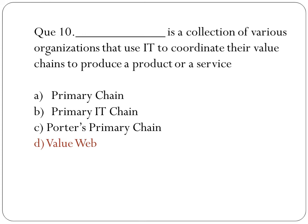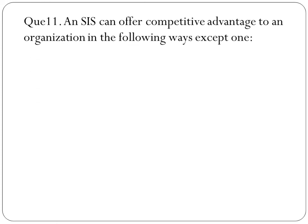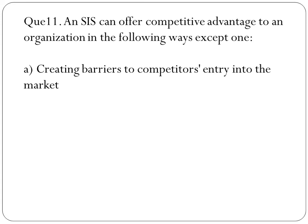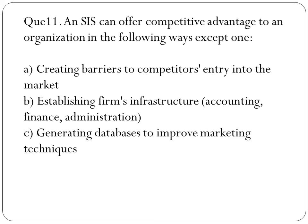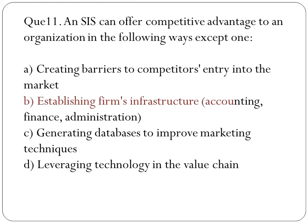Next question: an SIS can offer competitive advantage to an organization in the following ways except one. The options are: creating barriers to competitors' entry into the market; establishing the firm's infrastructure such as accounting, finance, or administration; generating databases to improve marketing techniques; and leveraging technology in the value chain. The right answer — the odd one out — is establishing the firm's infrastructure. All other options are advantages that SIS provides.